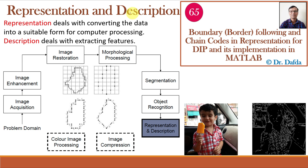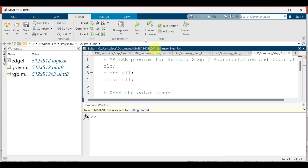The next step is representation and description. Image representation involves converting an image into a suitable format that can be used for further analysis. Image description refers to extracting meaningful information or features for tasks like object recognition, classification, or retrieval — and it actually comes before object recognition. This step focuses on extracting relevant features such as edges, textures, or shapes to create a simplified and informative representation. Common methods include contour tracing, chain codes, boundary descriptors, and region-based representations. Here, using edge detection, we convert image data into a suitable form for computer processing. Let us implement this in MATLAB.